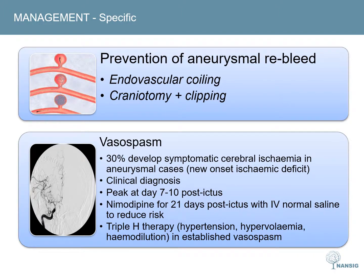It is important to secure the aneurysm early to prevent re-bleeding. Endovascular coiling avoids the need for craniotomy, but still carries a risk of stroke and there is a risk of late aneurysm recurrence which may require re-treatment. Craniotomy and clipping also carries a risk of stroke and can be a difficult operation with a swollen brain. There are also risks of haemorrhage, infection, and seizures with any craniotomy operation.